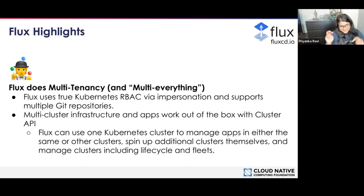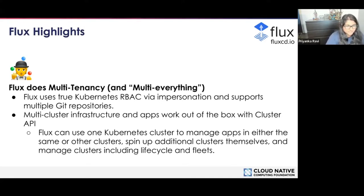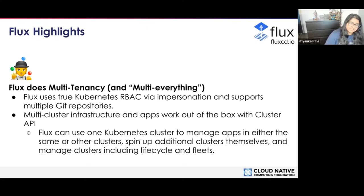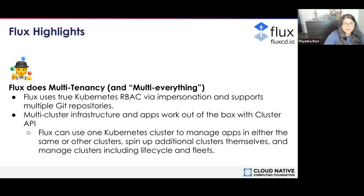Flux does multi-tenancy and multi-everything, as we like to say. Flux uses true Kubernetes RBAC via impersonation and supports multiple Git repositories. You can have a multi-cluster infrastructure — apps work out of the box with cluster API. Flux can use one Kubernetes cluster to manage apps in either the same or other clusters, spin up additional clusters themselves, and manage clusters including lifecycle and fleets. There are different types of multi-tenancy: soft tenancy, where you have a cluster with multiple namespaces, and hard tenancy, where you give each team their own cluster.